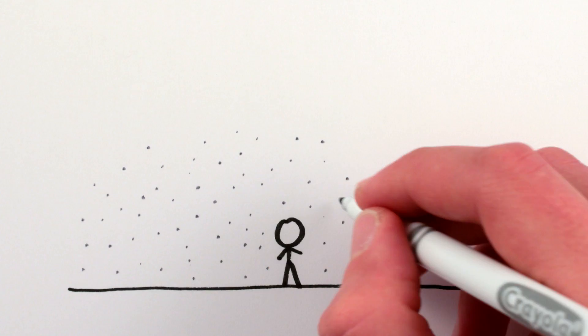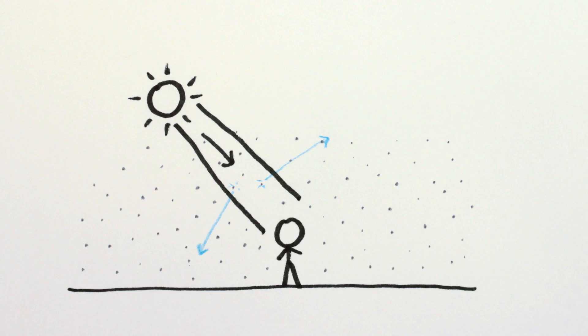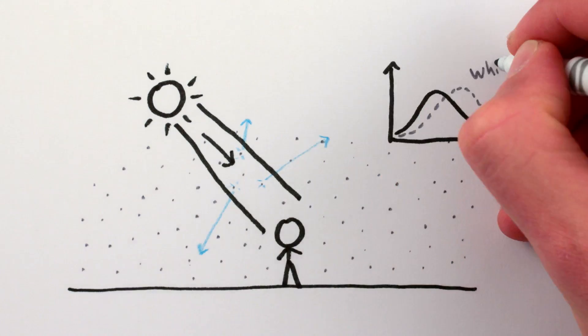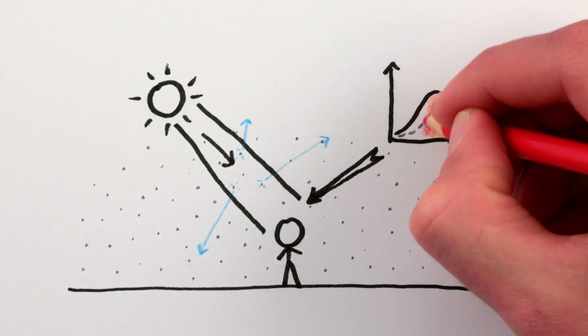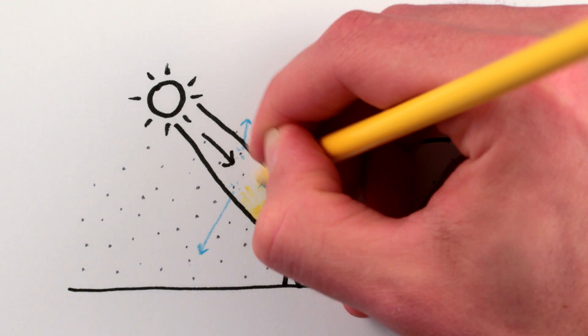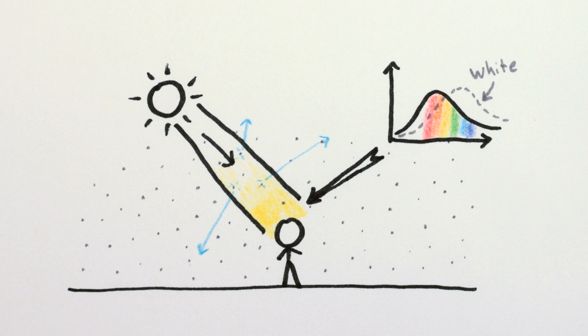And the reverse effect happens when you look near the sun. Light that was trying to get to your eyes gets scattered away, so the remaining light has a lot less blue and slightly more red compared with white light, which is why the sun and sky directly around it appear yellowish during the day.